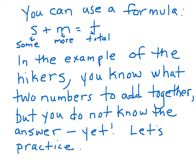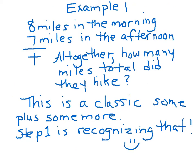You can use a formula: S plus M equals T. Math will eventually use lots and lots of formulas. This is just one example. So in the example of the hikers, you know what two numbers to add together. You have your sum plus your more, but you don't yet know the answer. Sum is your 8 miles in the morning. Sum more is your 7 miles in the afternoon. T is your total. All together, how many miles did they hike? This is your classic sum plus some more. Step one is recognizing that that's the kind of problem it is.